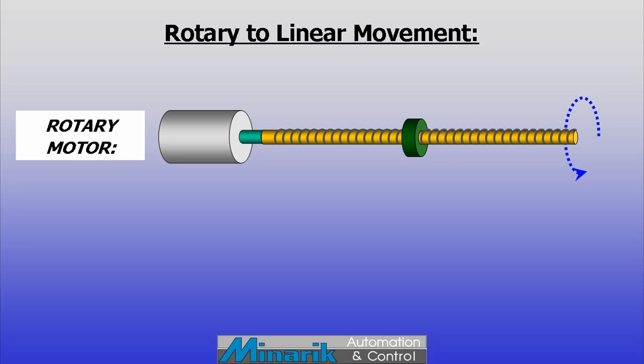Rotary motors can also turn a threaded shaft while the load is connected to a non-rotating nut. This is commonly known as a linear actuator.